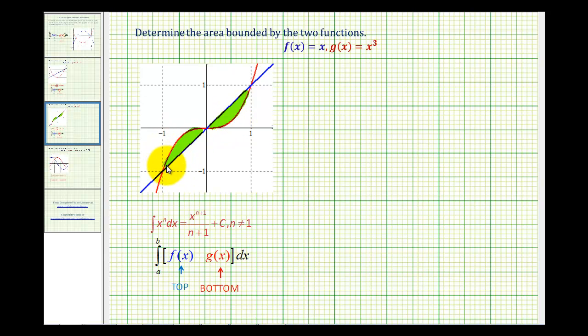Because we have the graph we can see the x-coordinate of this point of intersection is negative one, and then we have another intersection point at x equals zero, and then at x equals one. So we'll have to integrate from negative one to zero and then from zero to one.